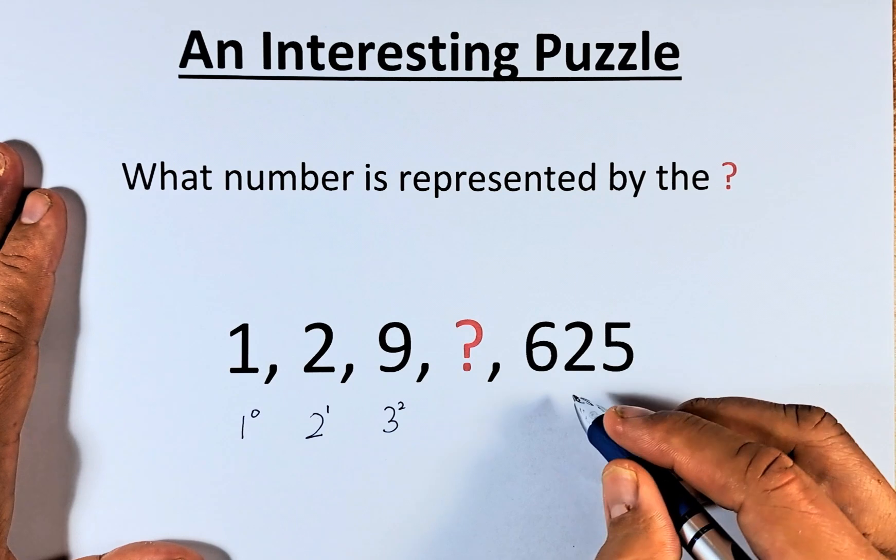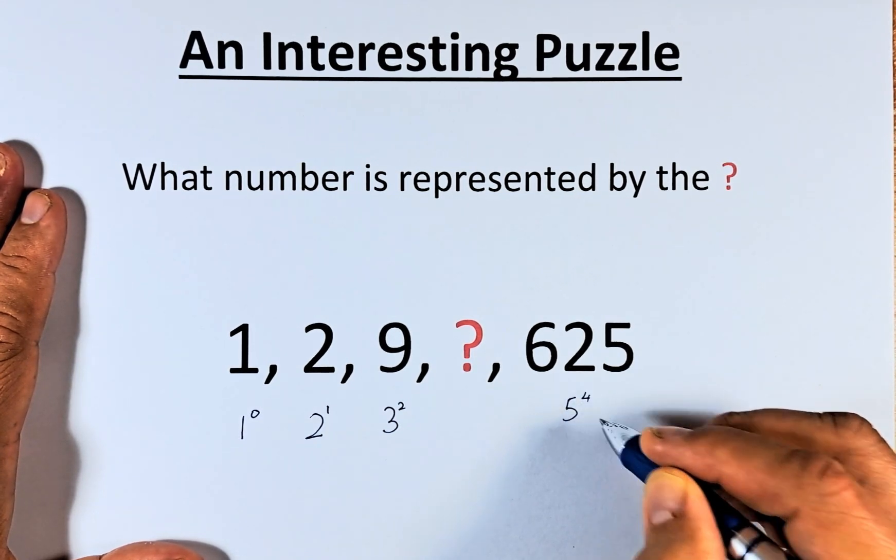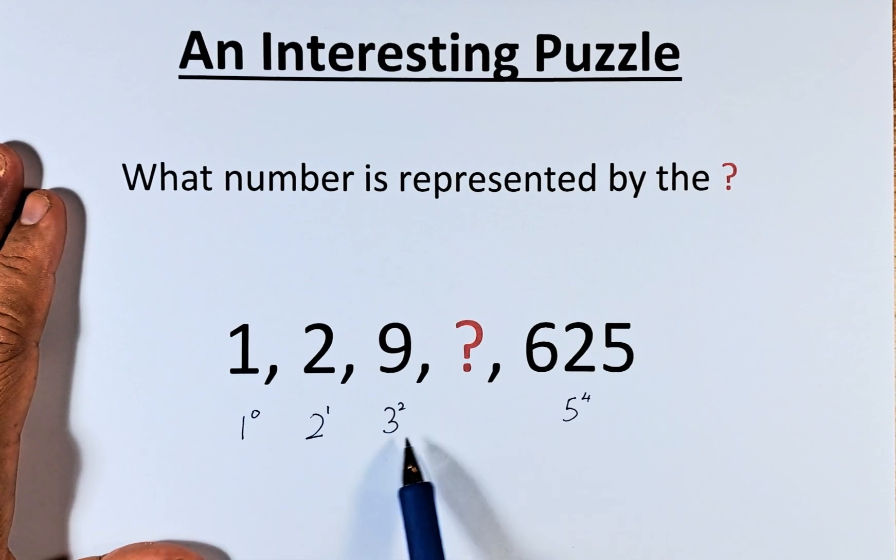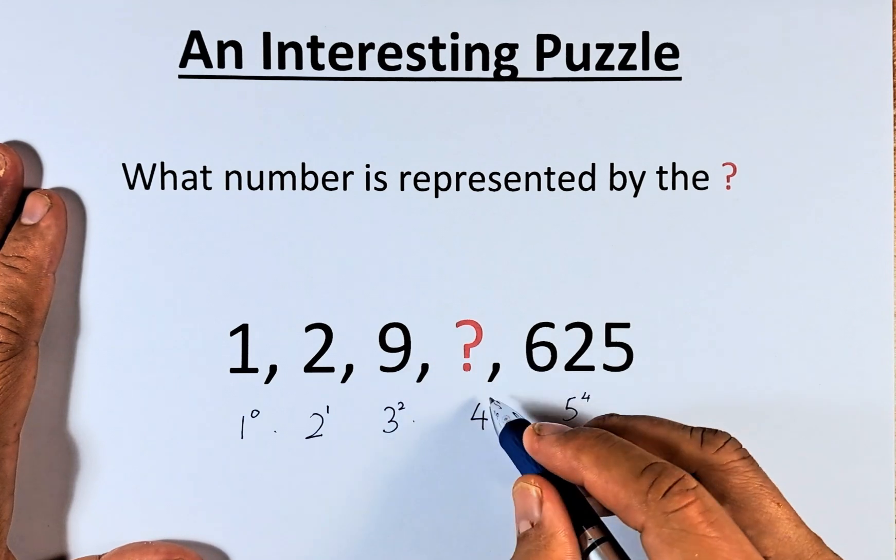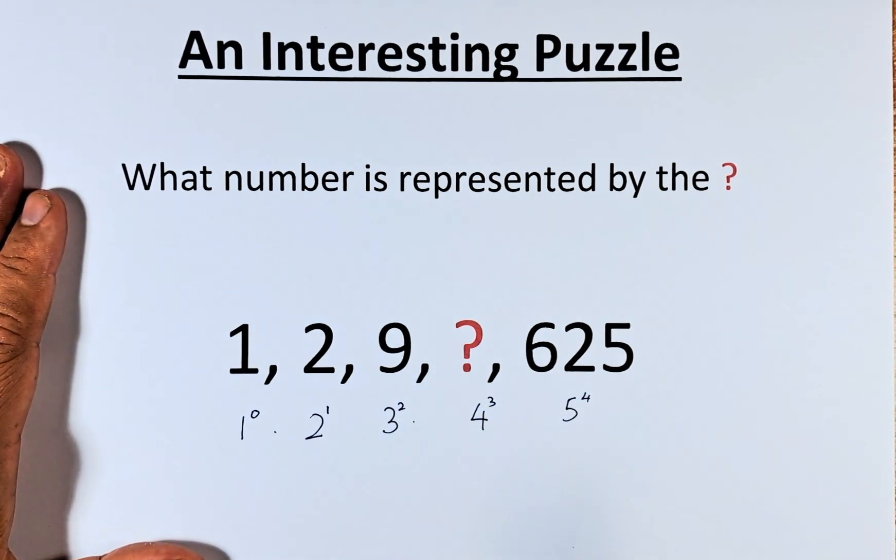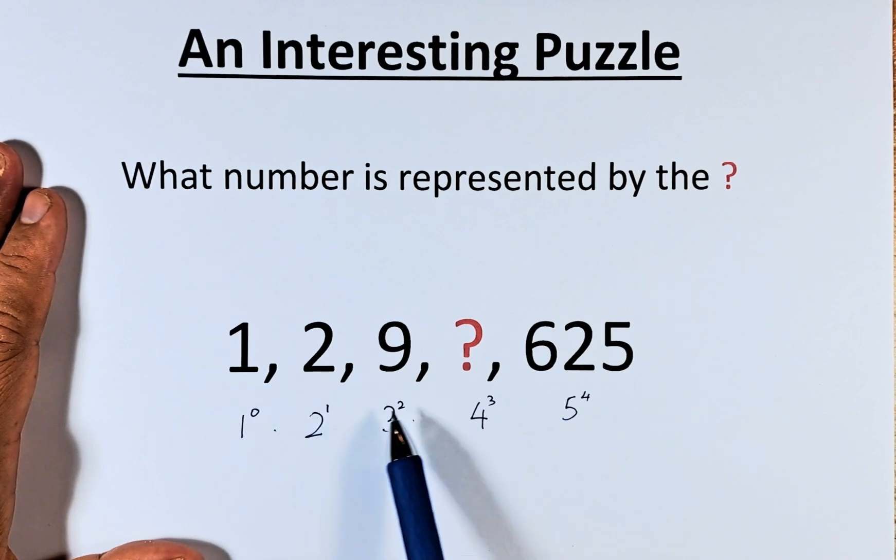So what is 625? 625 is actually 5 to the power of 4. So the next number has to be 4, and the power must be 3. You can see the pattern here: base goes 1, 2, 3, 4, 5, and the power is 0, 1, 2, 3, 4.